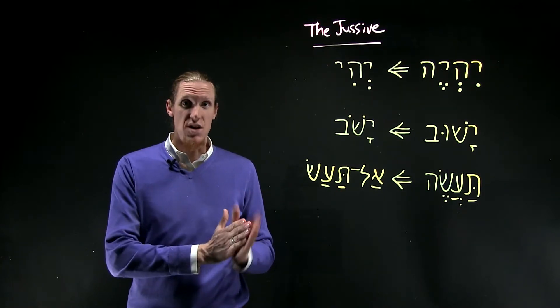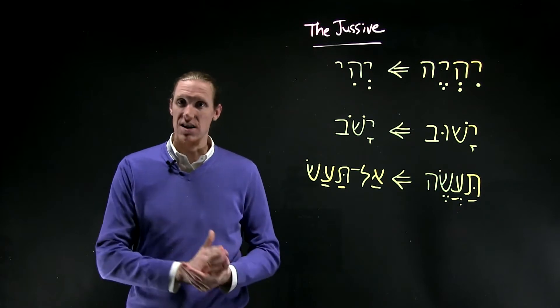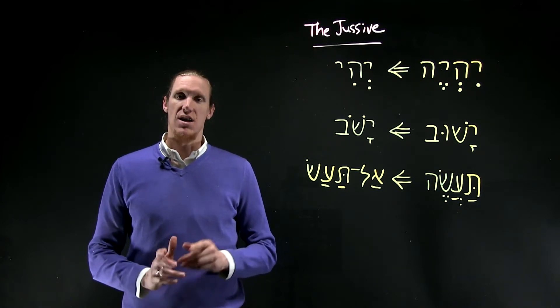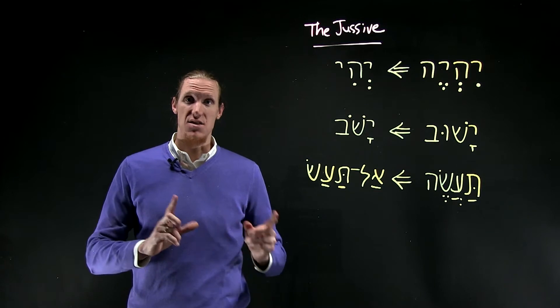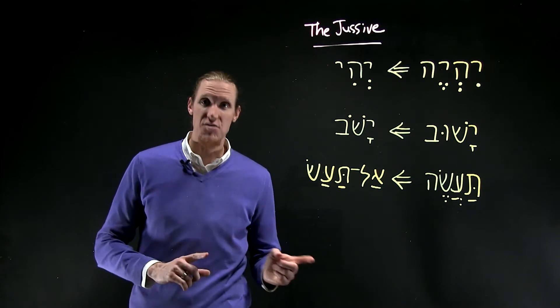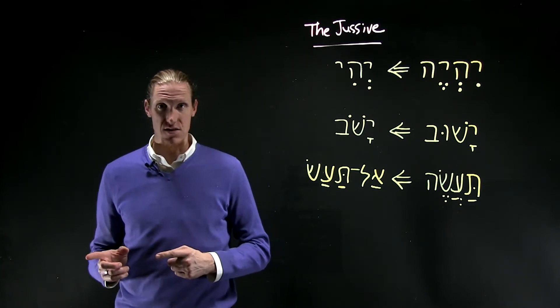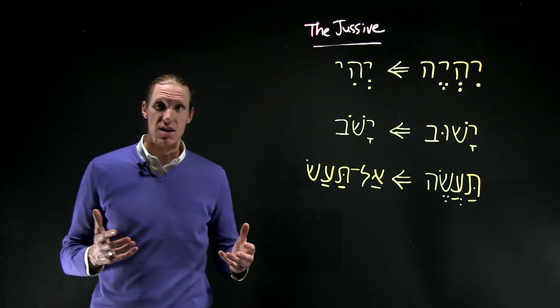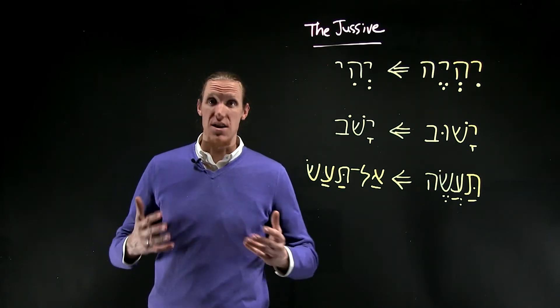One specific one, the jussive, is only second and third person imperfect forms. The jussive can express the subjunctive in both positive and negative ways. So positively, it would be like let there be light.